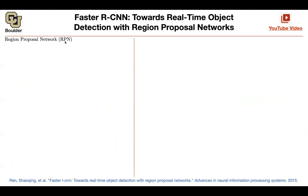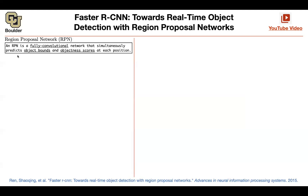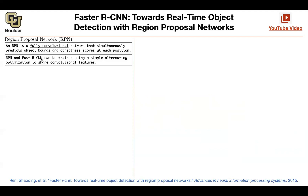You are going to replace that external algorithm, which was selective search, with a Region Proposal Network (RPN), which is going to share a lot of parameters with Fast RCNN. So you're going to use this idea of parameter sharing — you have a region proposal network, you have your Fast RCNN neural network, and they're going to share the convolutional layers.